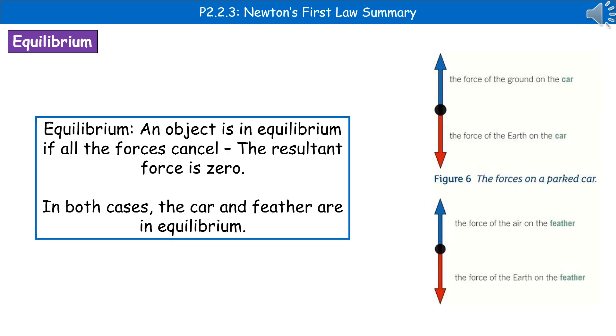The last thing we need to consider is this term equilibrium. So when we're talking about equilibrium, we're talking about where the resultant force is zero, so the forces have cancelled each other out. That means that the object is either going to keep moving at the steady speed, or it's going to remain stationary if it was already stationary.